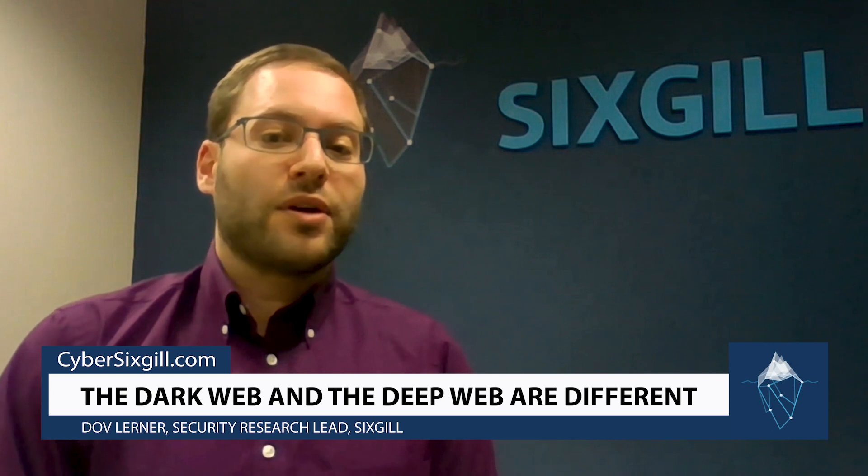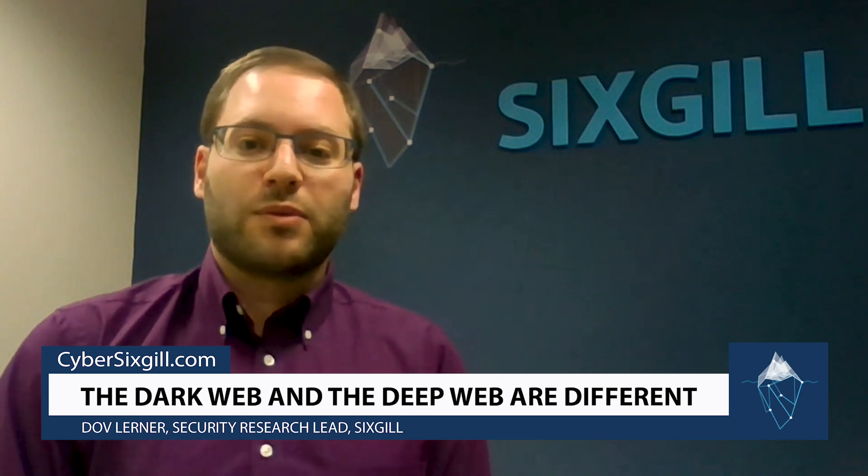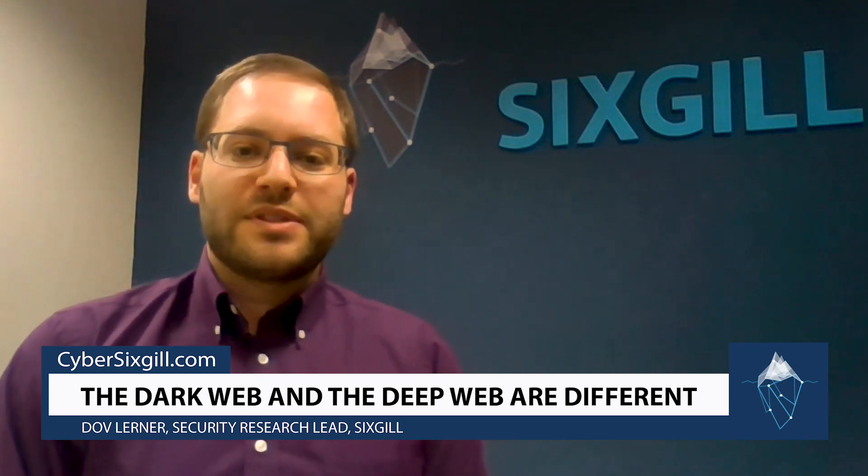The deep web includes any network that's accessible from the internet but restricted. So it includes university networks, because for a university network you need a login and then you can access whatever internal resources from the university. It also includes Telegram, QQ groups, or WhatsApp. So the deep web is very broad and is also mostly legitimate, while the dark web onion sites are a little bit more problematic.